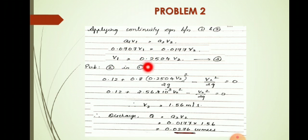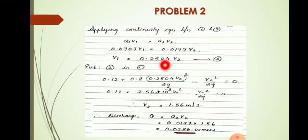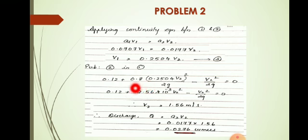Applying the continuity equation between points 1 and 2, a1 v1 equals a2 v2. Substituting the area values, v1 is equal to 0.2504 times v2. This is equation number 2. Substituting this into equation 1 gives an equation with only one unknown, v2.